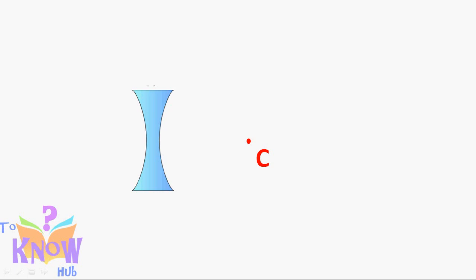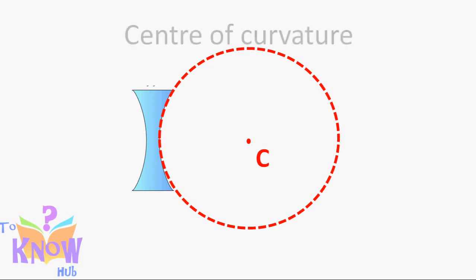A spherical mirror can be imagined as a part of a sphere. The center of the sphere is called center of curvature, generally denoted by capital C. It is not part of mirror, imaginary point, but it is very important.